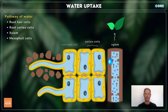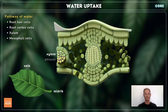From the cortex, water enters the xylem vessels, moves up the stem, and into the leaves. In the leaf, the xylem passes along the midrib, branches off into the leaf veins, and finally arrives at the mesophyll cells. Water enters the cells by osmosis, where it's used alongside carbon dioxide to produce glucose by photosynthesis.